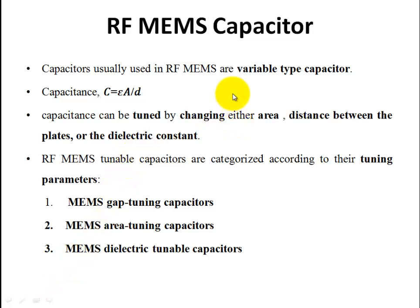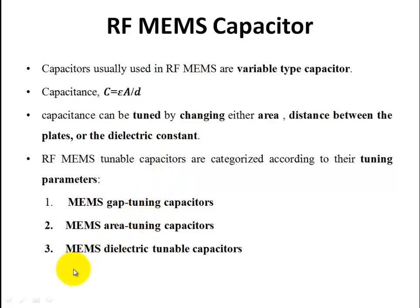Next application: RF MEMS capacitors. RF MEMS mainly use variable-type capacitors. Capacitance C equals epsilon times A divided by d, meaning capacitance can be varied by changing either the area, the dielectric constant, or the distance between the plates. RF MEMS capacitors are classified into three types: MEMS Gap Tuning Capacitor, MEMS Area Tuning Capacitor, and MEMS Dielectric Tunable Capacitor.